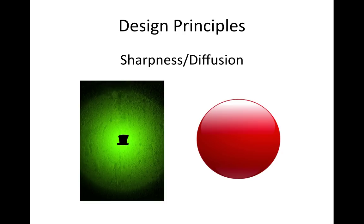Sharpness versus diffusion. If you look at the green object on the left, the soft vignette draws our attention to the black object that's dead center. If you look at the red button on the right, the diffused highlight creates the sense of three-dimensionality, making it look like this flat circle is actually reflecting light and creates a sense of 3D space.